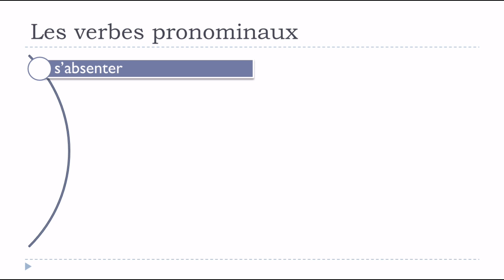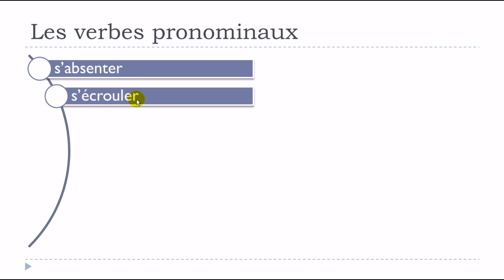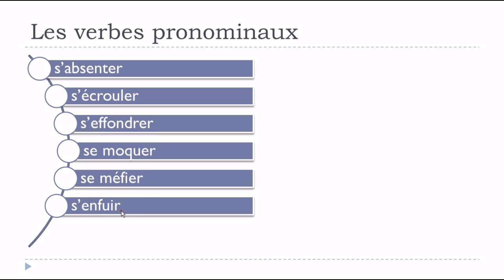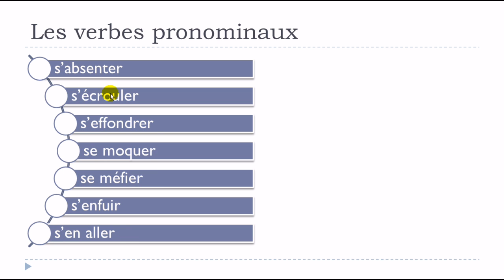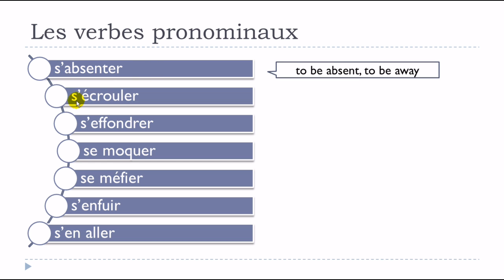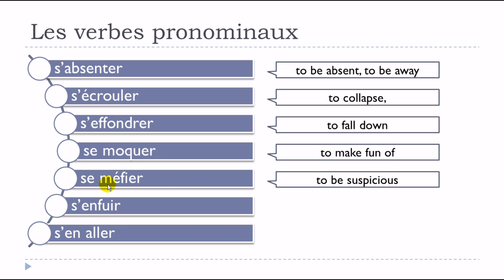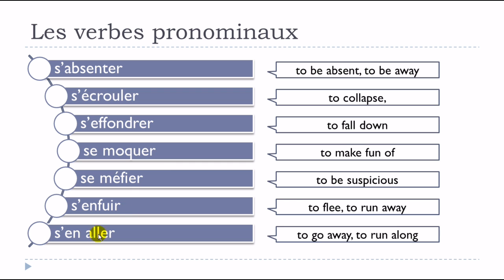Here are some examples of verbs that only exist in the pronominal form: s'absenter, s'écrouler, s'effondrer, se moquer, se méfier, s'enfuir, s'en aller. In all these cases, these verbs only exist with 'se' before them — la forme pronominale. Keep in mind that using them will modify how you conjugate them, as covered in previous videos.